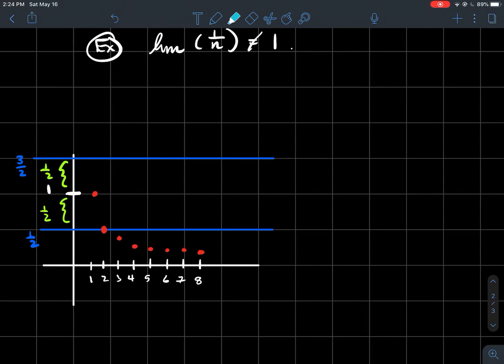And so what I'm saying is, can I find some indices so that the red points are either always outside of that blue window, or they pop out of that blue window infinitely often? So what if I just took like multiples of four to be my indices?